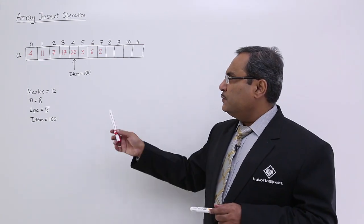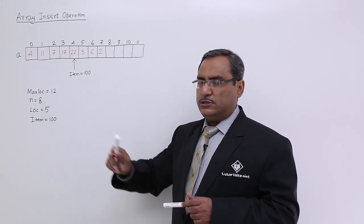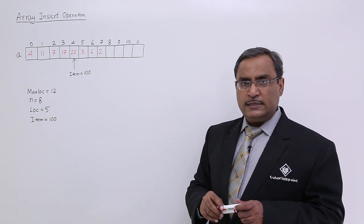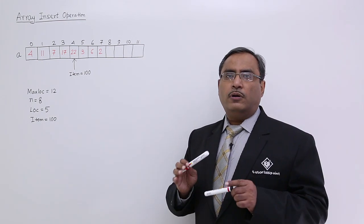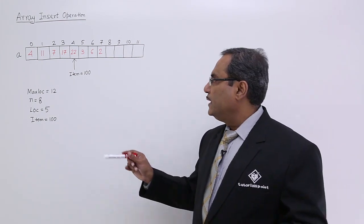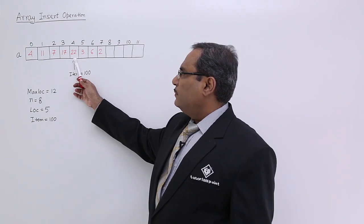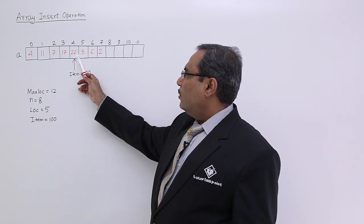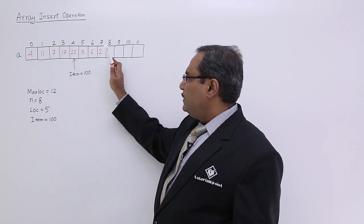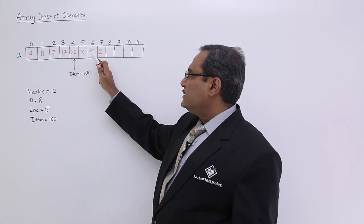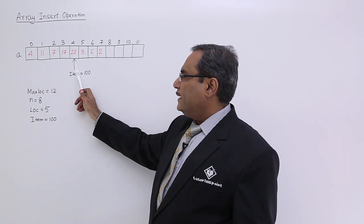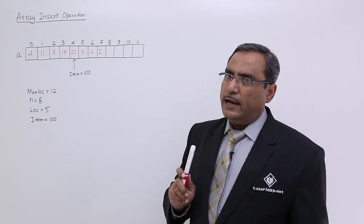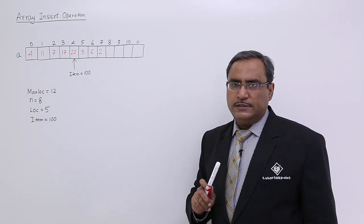Now, if n is not equal to max_loc and n is lesser than max_loc, that indicates we have some room for insertion. If you want to perform the insertion operation, then the existing data needs to be shifted to the next locations so that a vacant space is created at the fifth location and the insertion operation can be performed.